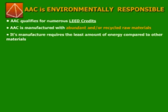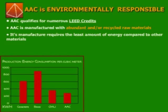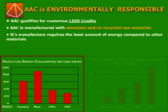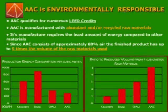AAC qualifies for numerous LEED points. AAC is manufactured with abundant and/or recycled raw materials, and is manufactured using the least amount of energy. As you can see on the left graph, AAC uses only 280 kWh to produce one cubic meter, while you need 900 kWh to produce the same volume of brick.